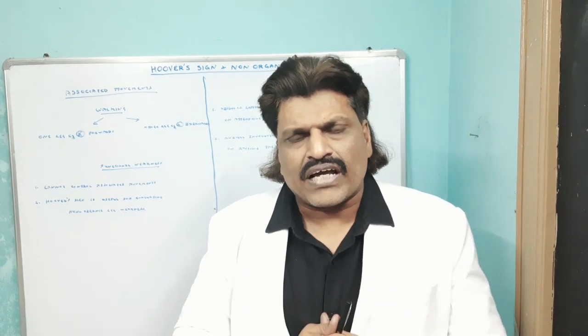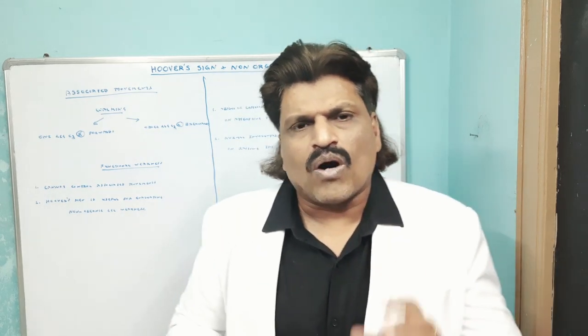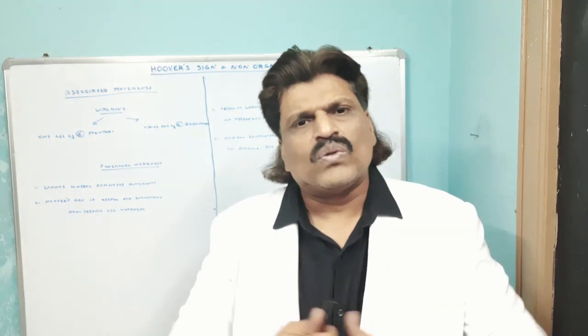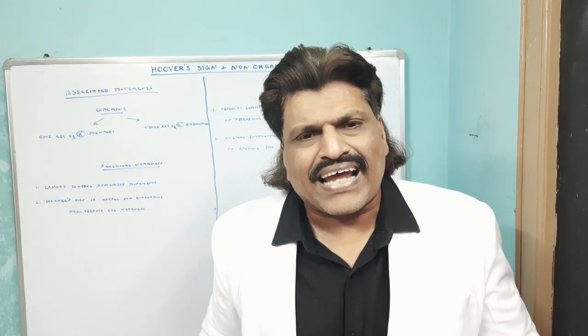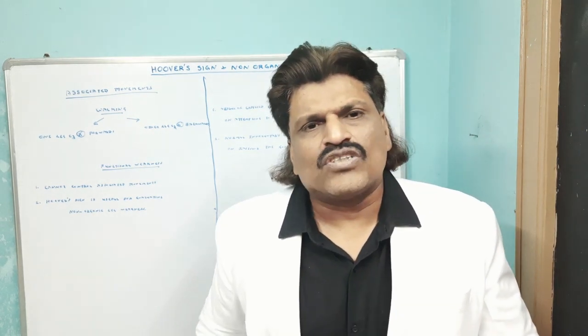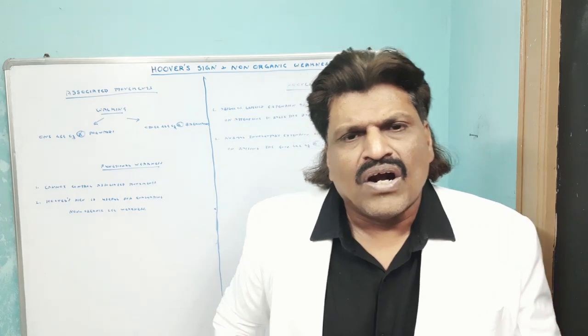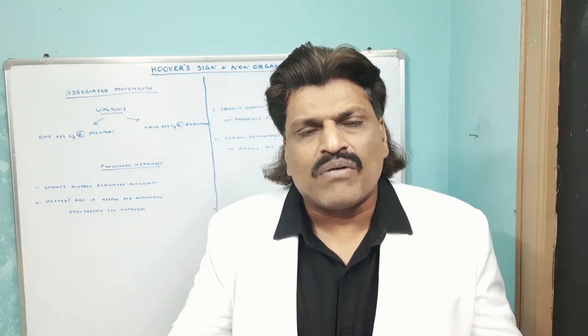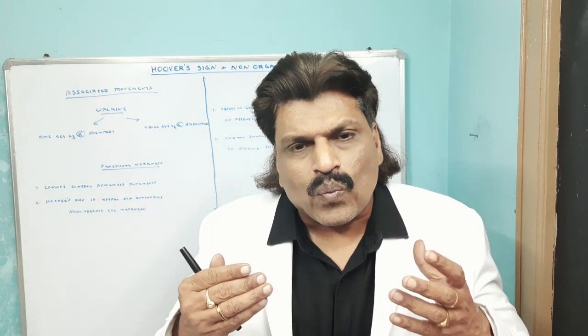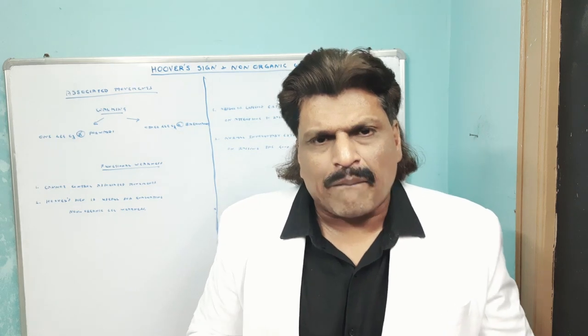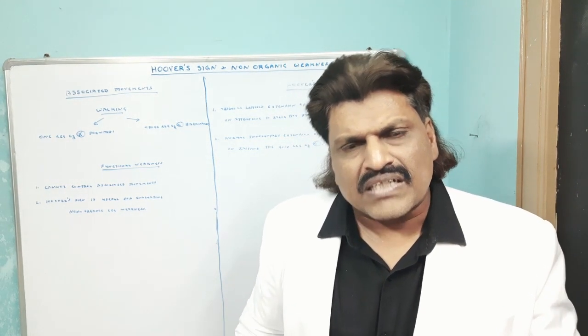Hoover's Sign is useful for evaluating non-organic weakness. To elicit it, we ask the person to lie on the bed. Imagine he claims right-sided weakness. We ask him to lift the right leg upwards. The person says he cannot lift the right leg because he has weakness on the right side — which is not true. The examiner places one hand on the supposed weak right leg and the other hand on the supposed normal left leg.